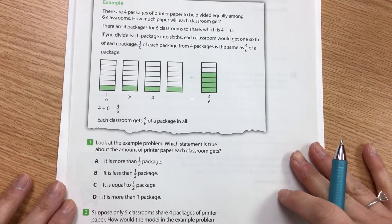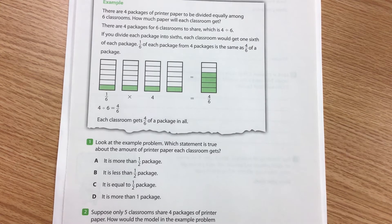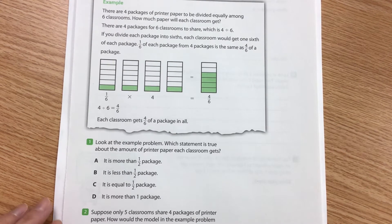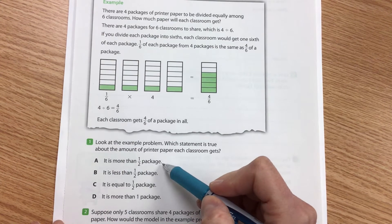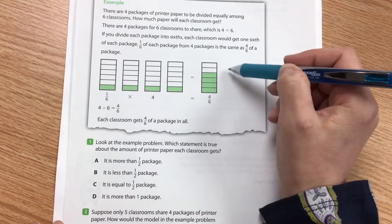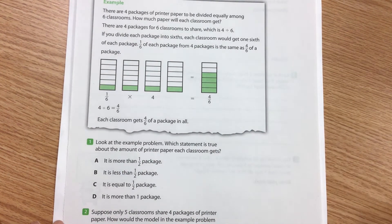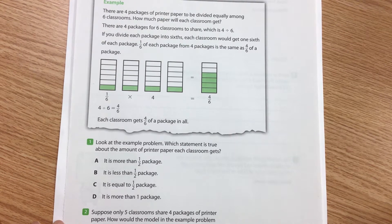Number one says look at the example problem. Which statement is true about the amount of printer paper each classroom gets? Is it more than half a package? So we're looking at our final answer over here. Is it less than half a package? Is it equal to one-half package? Or is it more than one whole package?